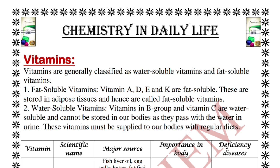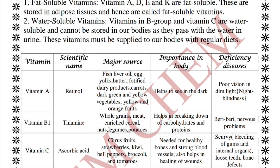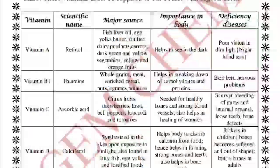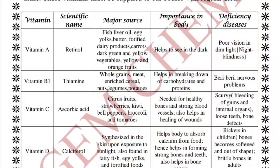Vitamins are an essential part of our diet. They are classified into fat-soluble vitamins — A, D, E, and K — and water-soluble vitamins — the B and C groups. For each vitamin, we will look at major sources, scientific name, importance in the body, and deficiency disease.